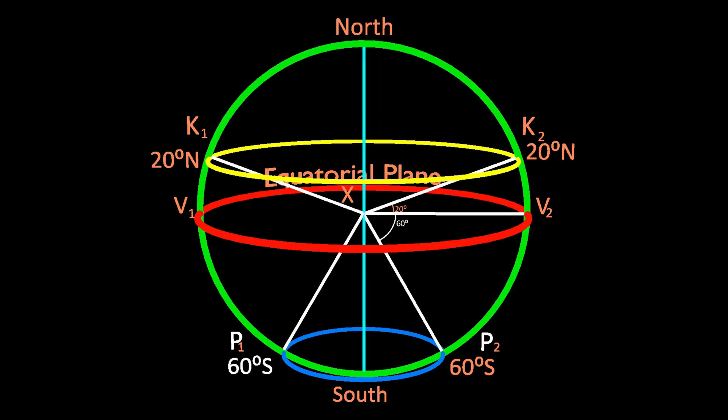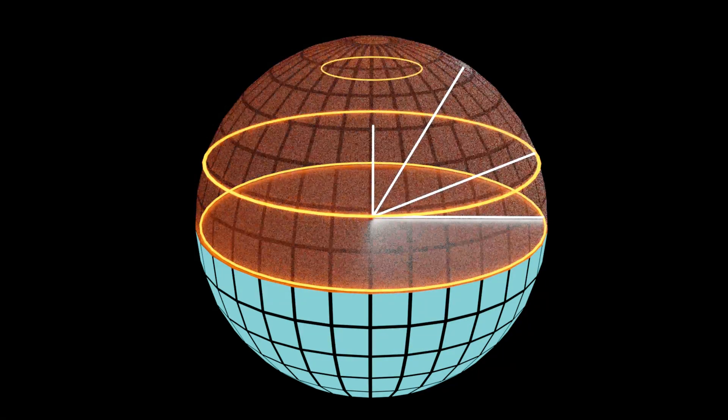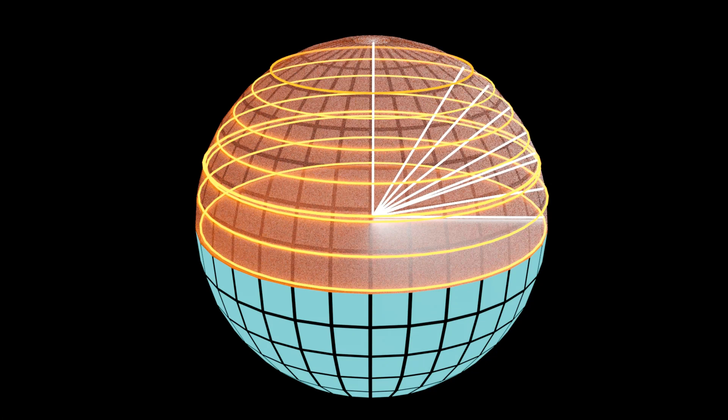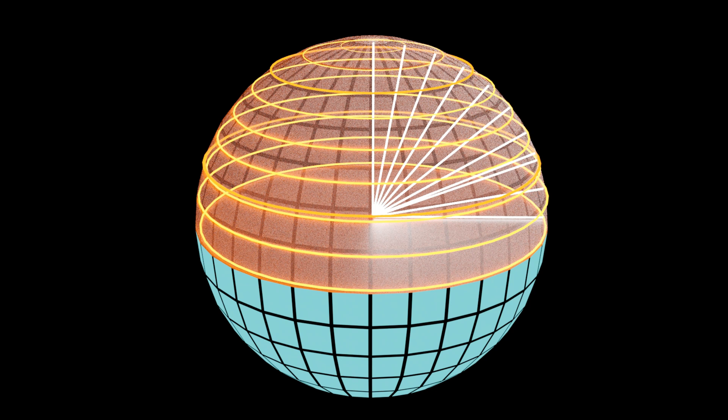You must have realized that the ellipse drawn by joining the 20 degree points is larger than the ellipse joining 60 degree points. However, the distances XK1 and XP2 are the same. This is because we are dealing with a sphere. Note that though these lines appear to be ellipses in a diagram, on the globe, they are circles. The circles thus created at some angular distance from the center of the earth are parallel to one another. Hence, they are called parallels of latitude.